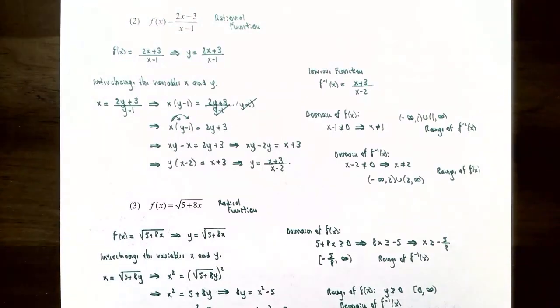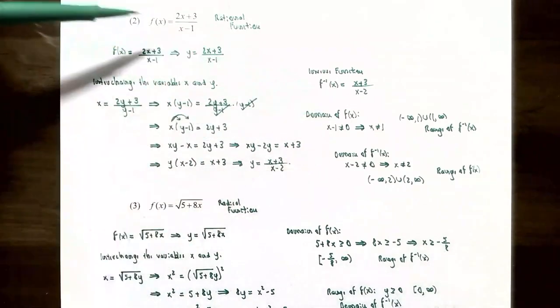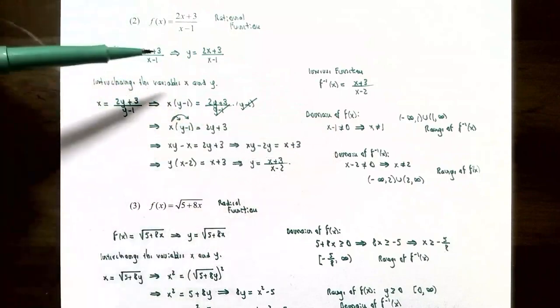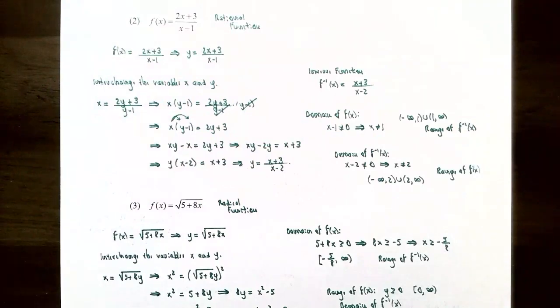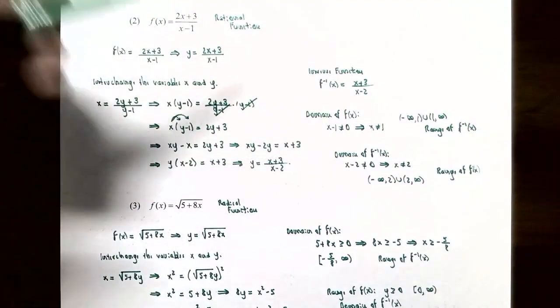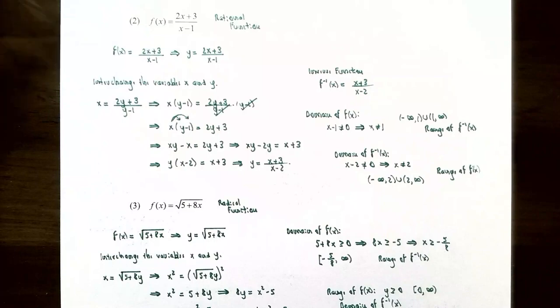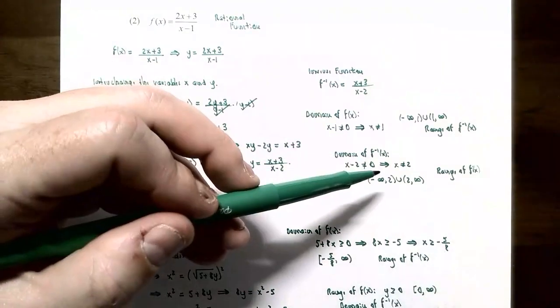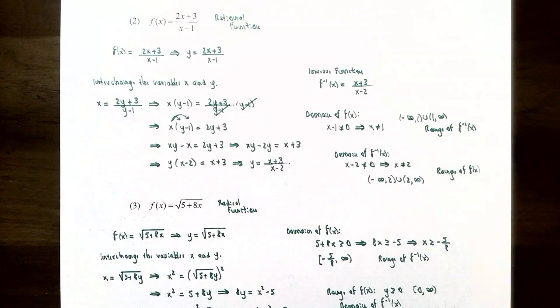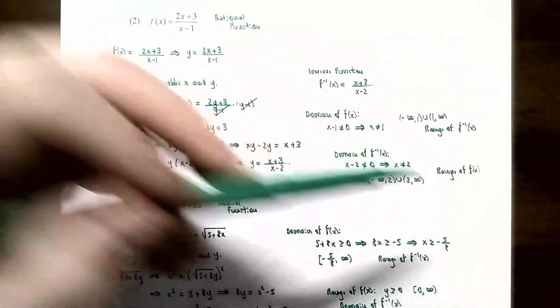Now let's discuss the domain and range of both f of x and the inverse function. For f of x, it's rational, so the denominator cannot be zero: x minus 1 cannot equal zero, meaning x cannot be 1. The domain of f of x is negative infinity to 1 union 1 to infinity, which is also the range of the inverse function. For the inverse function, the denominator x minus 2 cannot be zero, so x cannot equal 2. The domain of the inverse function is negative infinity to 2 union 2 to infinity, which is also the range of the original function f of x.